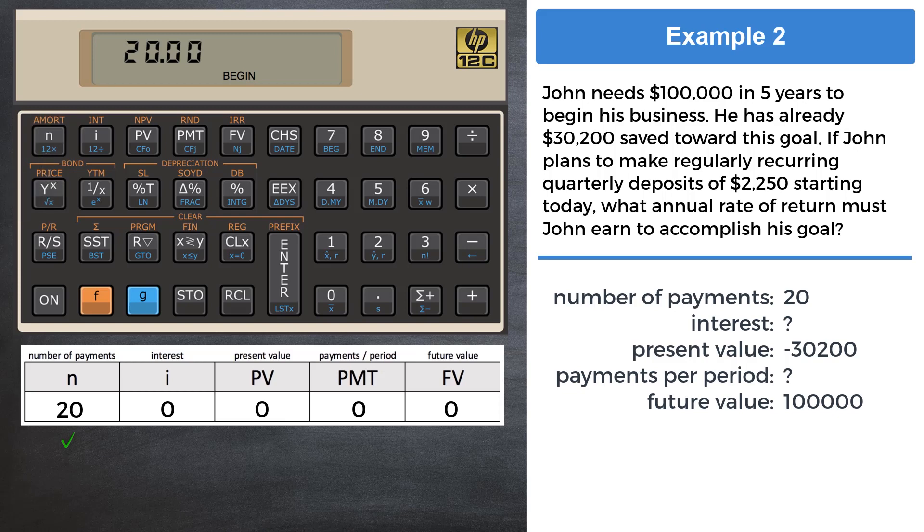In keeping with the cash flow model, money that leaves John has to be negative. So go ahead and enter the present value and payments as negative numbers using the CHS key. The last variable, future value, is entered into the FV register as 100,000. We're ready to find the interest. Press the I key. The calculated value is 1.96.